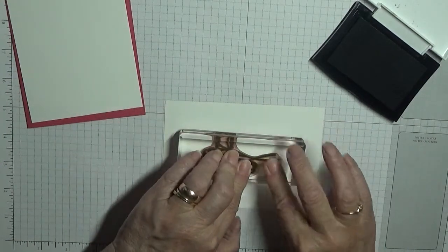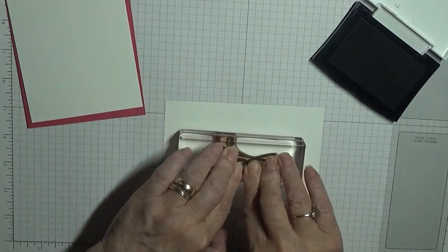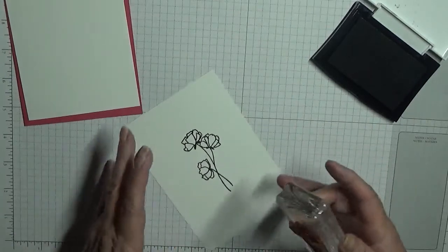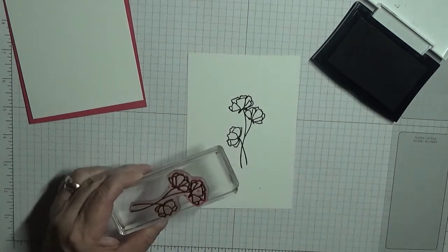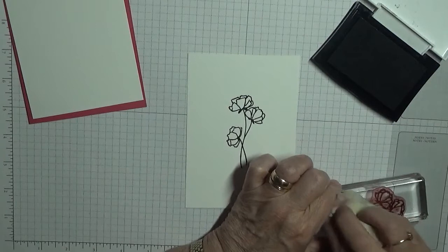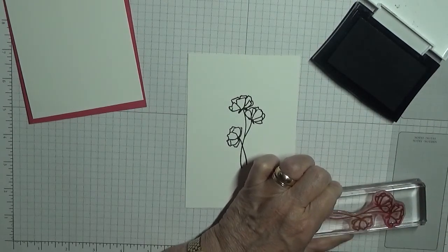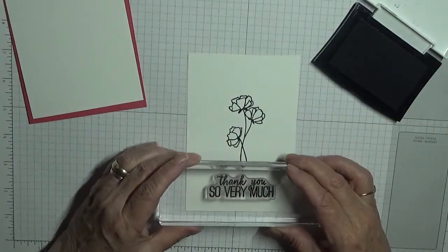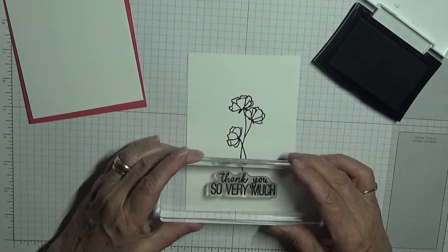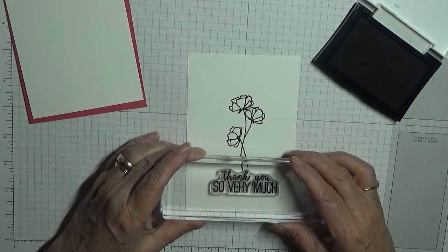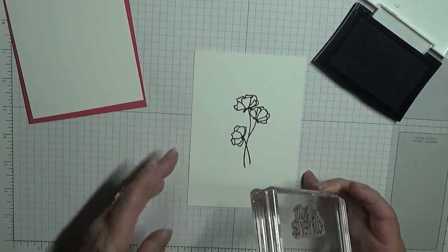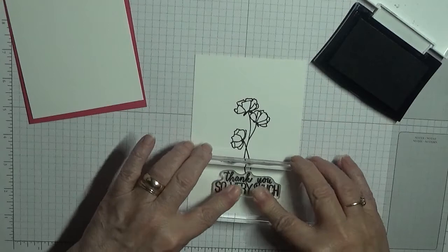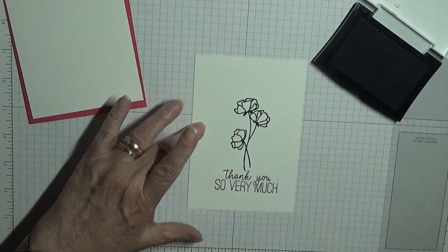Remember, if you're using photopolymer stamps, to use your stamping mat. I obviously don't need to use it because I've got a thick cushion of paper plus my glass mat on here, which makes it easier to stamp photopolymer. And then we stamp 'thank you very much' and we just go so that the bottom of the petals touch the flower and make sure it's straight.